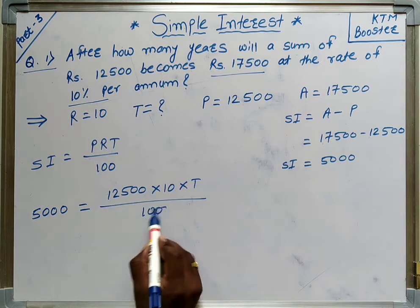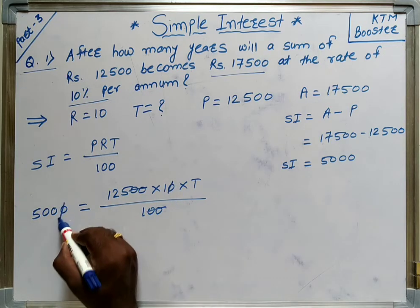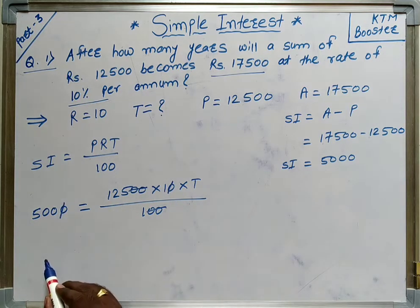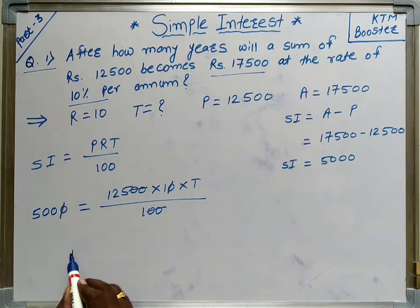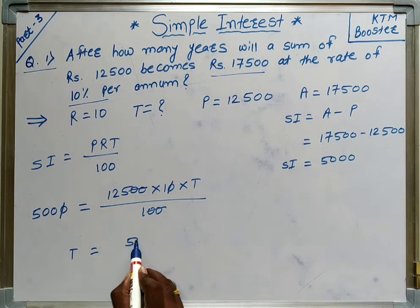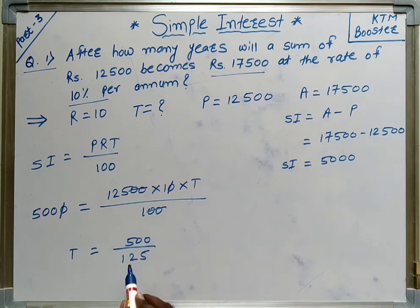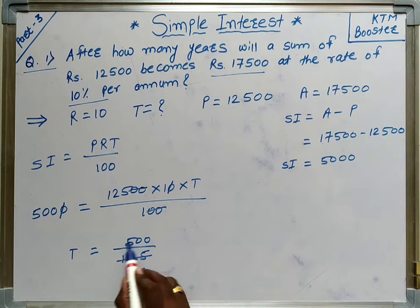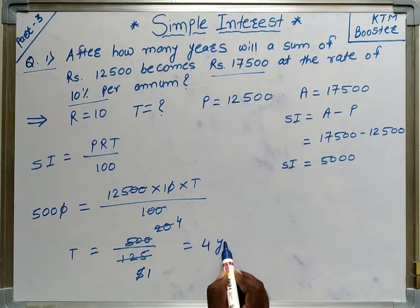Substituting into the formula: 5,000 equals 12,500 into 10 into T divided by 100. The zeros cancel, and we are left with T equal to 500 divided by 125. Cancelling by 25, that gives us T equal to 4 years.